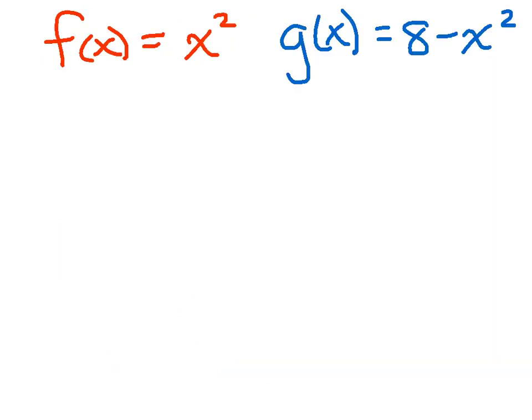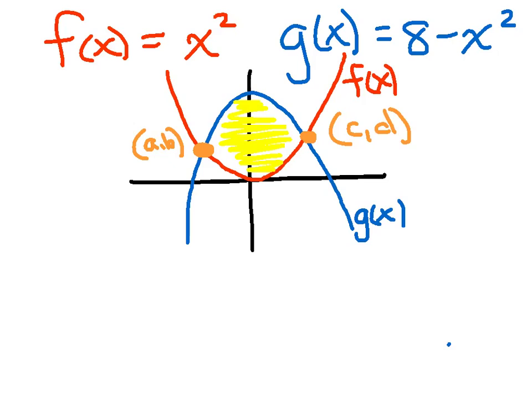We're going to attack one problem in our notes today with four or five parts. It's the same picture every time — we're just going to change the solid. So f of x equals x squared, g of x equals 8 minus x squared. First and foremost, get a sketch drawn so we know who our upper and lower are. I've got mine sketched out with my shaded area colored in and my slice drawn in. I got a little lazy and didn't find the intersection points — I just labeled them A, B, C, D — and we're just going to work on our setups.